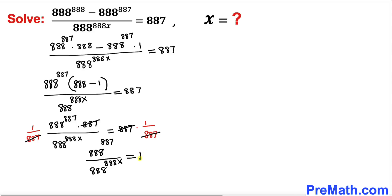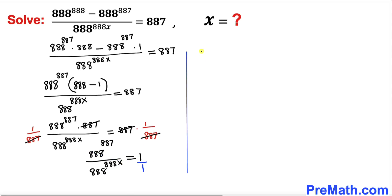On the right-hand side, 1 can be written as 1 over 1, making it a fraction. Let's go ahead and cross-multiply. As a result we get 888^888 times x equals to 888^887.